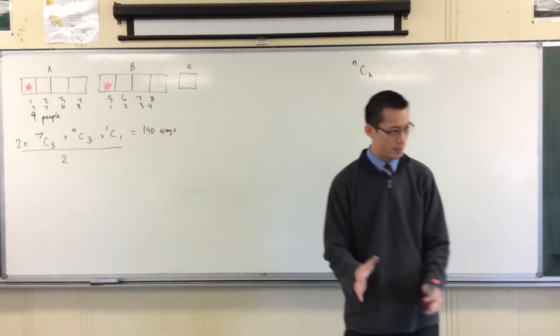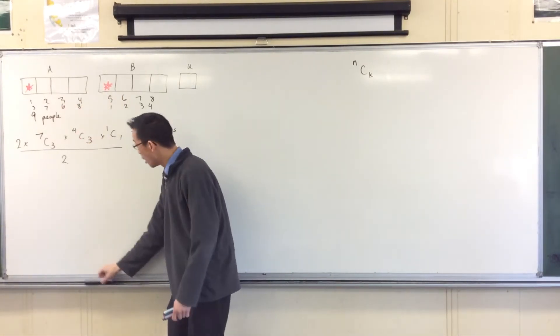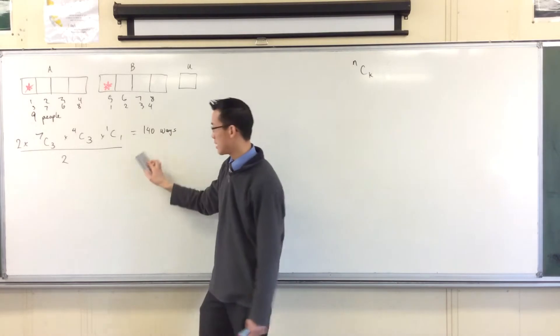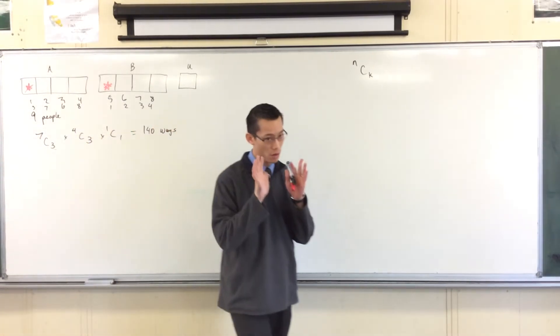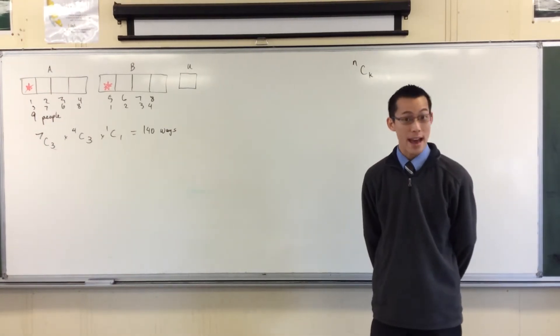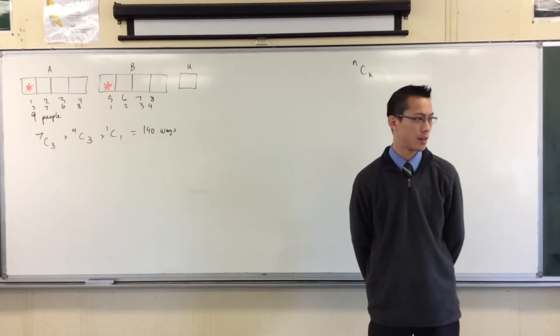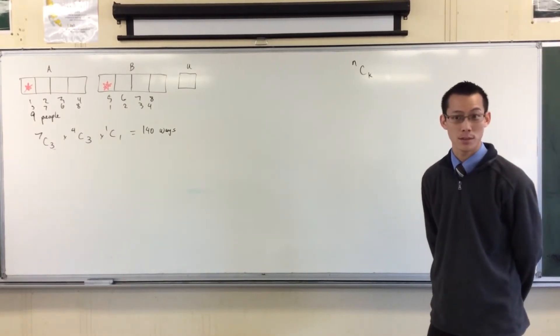The way I always think about it is, if you're over-counting because things can interchange, when you lock things in place, they're not interchangeable anymore. So that's why you're not over-counting. As it happens, in fact, we have under-counted. We are missing ways of arranging these teams.